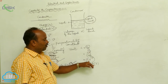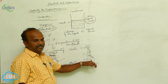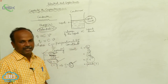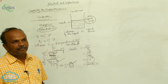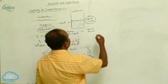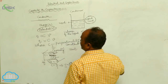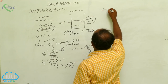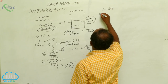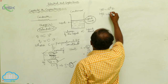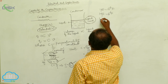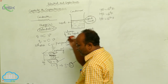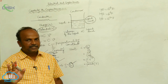Coulombs per volt is the unit of capacity, which is known as the farad. Since the farad is a large unit, we use submultiples: one microfarad equals 10 to the power of minus 6 farad; one nanofarad equals 10 to the power of minus 9 farad; one picofarad equals 10 to the power of minus 12 farad. This is the concept of capacity.